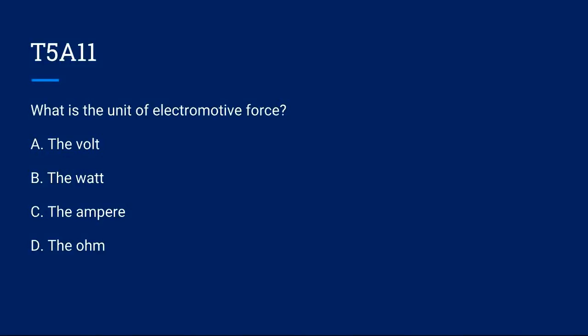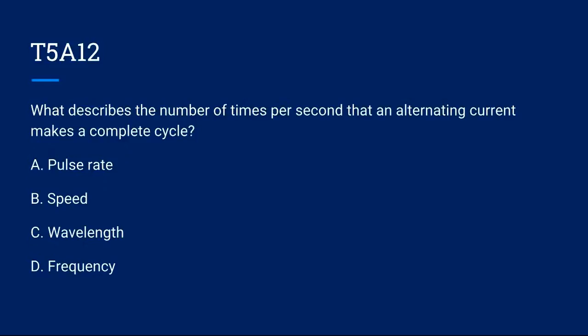T5A11, what is the unit of electromotive force? A. The Volt, B. The Watt, C. The Ampere, or D. The Ohm? The correct answer is A. The Volt. T5A12, what describes the number of times per second that an alternating current makes a complete cycle? A. Pulse rate, B. Speed, C. Wavelength, or D. Frequency? The correct answer is D. Frequency.